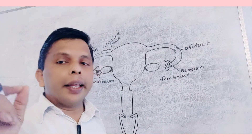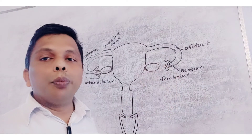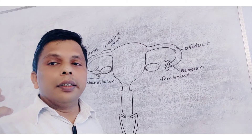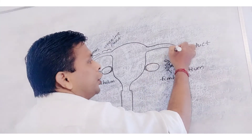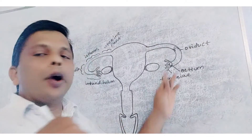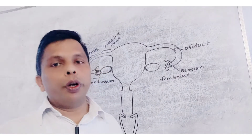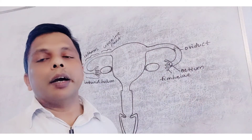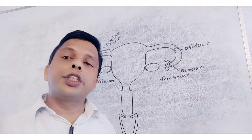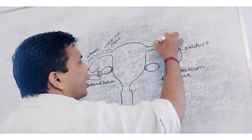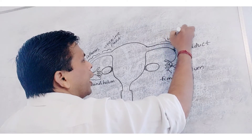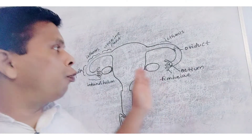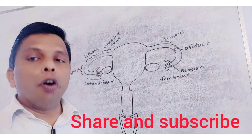The ampulla has some adhesive zones. The zona radiata at the ampulla — these adhesive zones help in fertilization. That means the ovum is retained here and waits for the spermatozoa for the purpose of fertilization. Then the isthmus part — it is the contractile part. The isthmus helps in continuous contraction and relaxation so that it helps in propelling spermatozoa towards the ovum for fertilization.